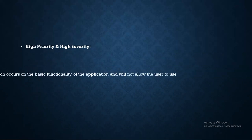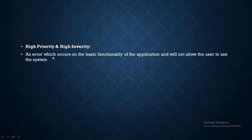Now let's look at some examples. High Priority and High Severity: an error that occurs on the basic functionality of the application and does not allow the user to use the system — where the core functionality has a defect and the application is not allowing the user to operate it. That gets both high priority and high severity.